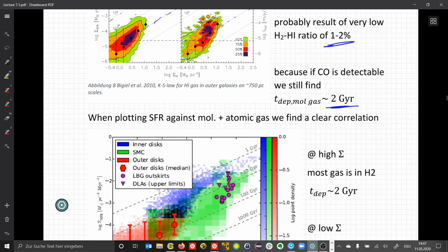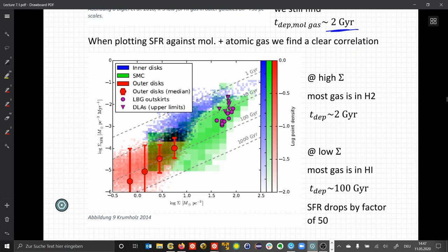Nevertheless, when we plot the star formation rate against molecular and atomic gas combined—this is sigma, the sum of the atomic and molecular gas—then we find at large values of sigma that most gas is in H2, and we have depletion times in the order of 2 gigayears, and at low sigmas we are in the order of 100 gigayears.